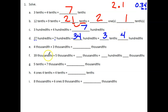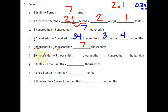Now the last two before we get to the tricky part where we rename. We have 4 thousandths plus 3 thousandths — like units, really simple — that's just 7 thousandths.